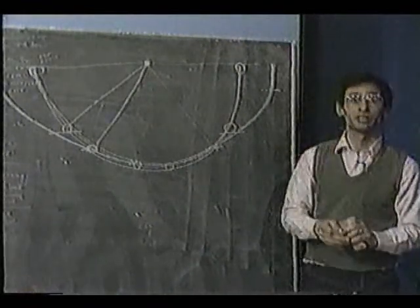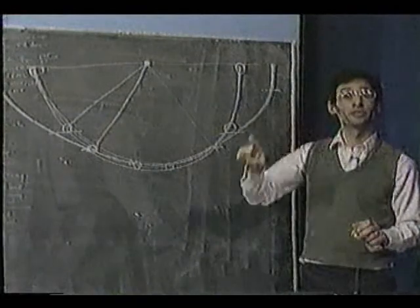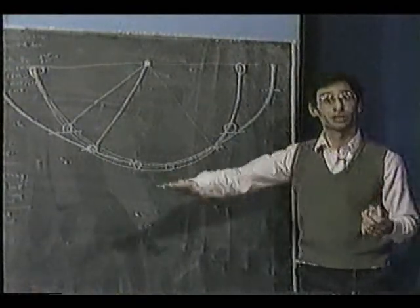This is the curve which a point on the rim of a wheel traces out as it rolls along a flat surface.